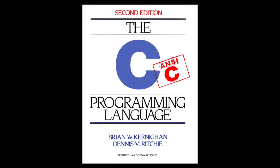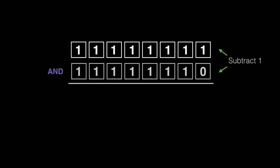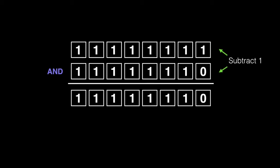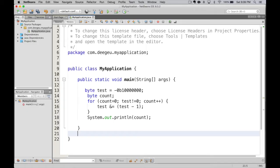Another option is the Kernighan bit counting method — that's Brian Kernighan from the Kernighan and Ritchie C language book fame. This algorithm loops only for each set bit. What we do is take our number and subtract one from it, then AND them together. That clears the least significant set bit. We keep doing this until the value is zero. The number of times we loop is the number of set bits. This improves the count, but it can still loop eight times if all bits are set.